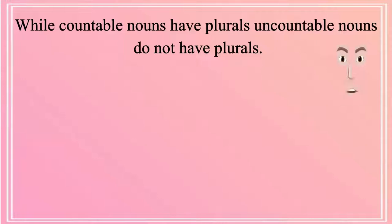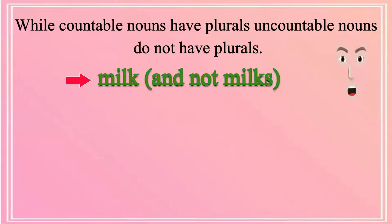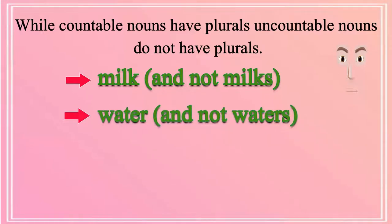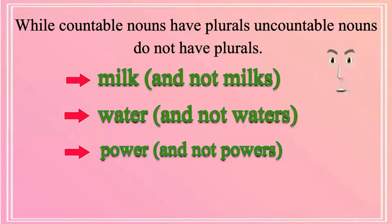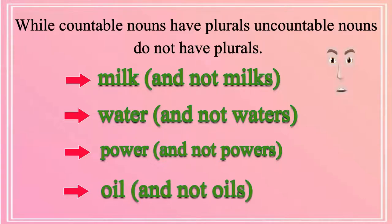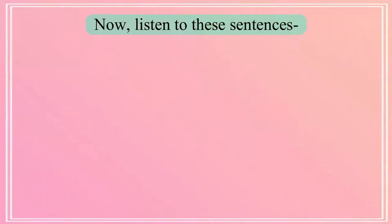While countable nouns have plurals, uncountable nouns do not have plurals, for the simple reason that they cannot be counted. It is milk and not milks, it is water and not waters, it is power and not powers — unless you have more than one power. It is oil and not oils, unless you are talking about more than one variety of oil.